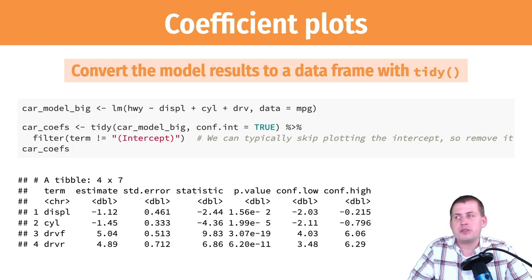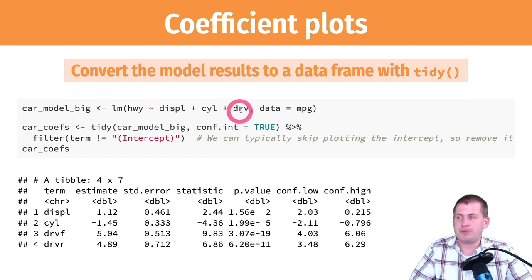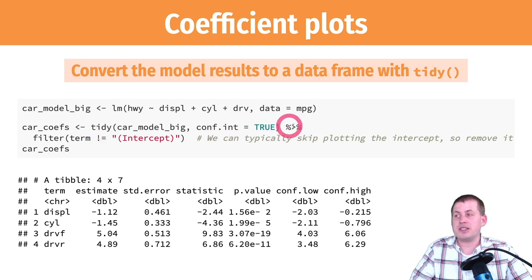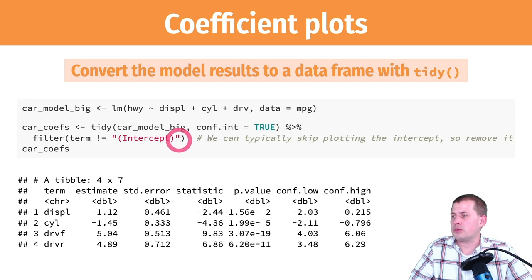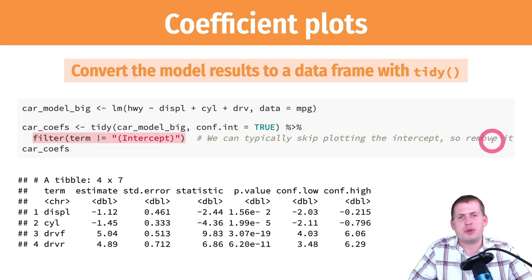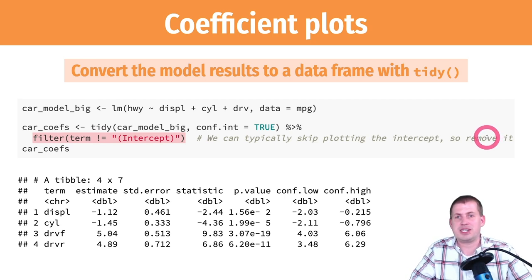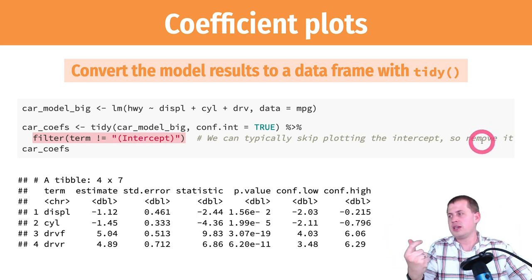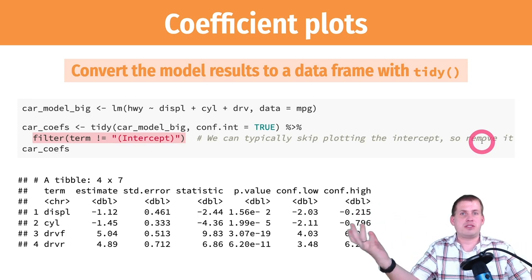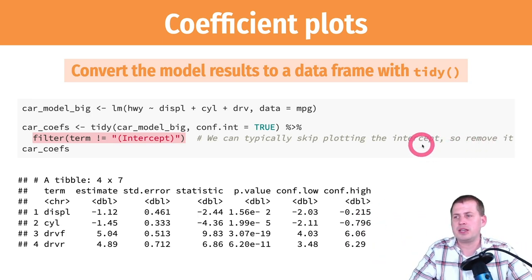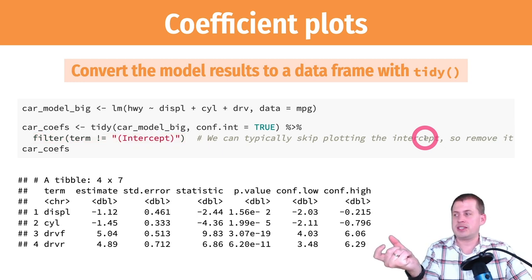For a coefficient plot, run your model like normal. We'll make a model called car_model_big where highway ~ displ + cyl + drv from the mpg dataset. Then convert it into a data frame using tidy() — and because it's a data frame, we can filter, mutate, group_by, etc. What we're going to do is remove the intercept term. We don't generally care about the intercept in multiple regression, because it would mean miles per gallon for a car with zero displacement and zero cylinders, which doesn't exist.